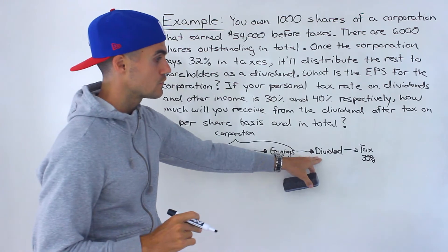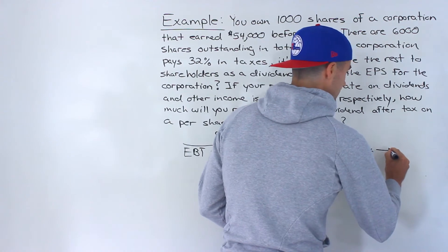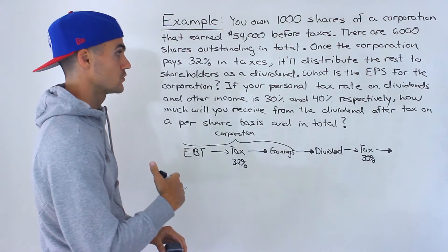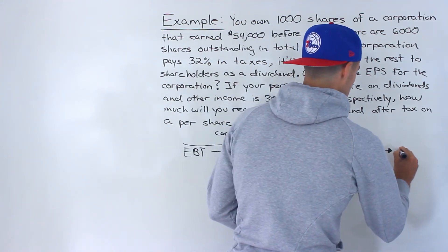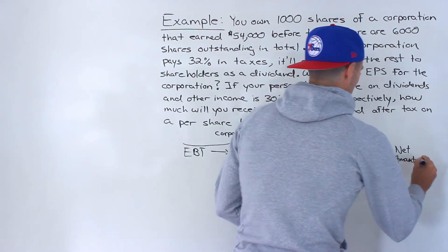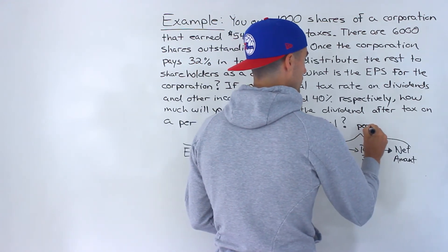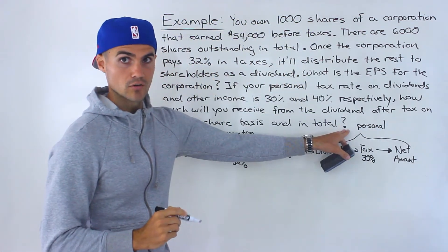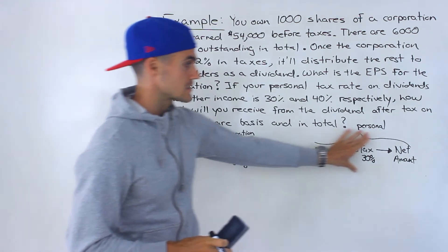Any dividends that we receive, we have to pay 30% tax on that. And then after that, that's what we're going to have left over — that's going to be the answer to the second question: how much will you receive from the dividend after tax? We can call that the net amount. All of this portion is on the personal level, while the earlier portion was on the corporation level. These earnings are all getting paid out as a dividend, and then this moves to the personal level.